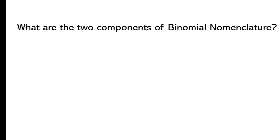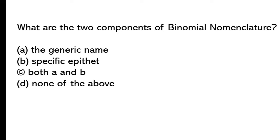What are the two components of binomial nomenclature? The generic name, specific epithet, both A and B, none of the above. So the correct answer is option C, both A and B. The generic name, specific epithet.